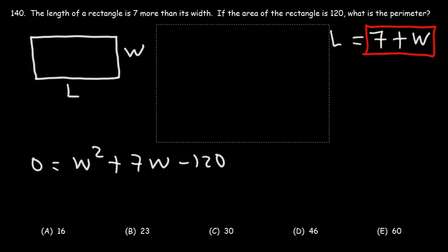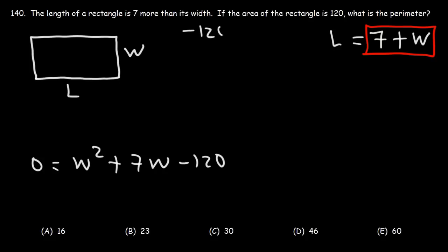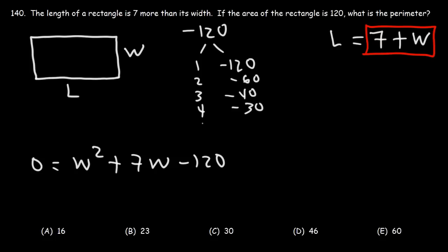Let's look for two numbers that multiply to negative 120 but add to the middle coefficient, seven. Dividing 120 by 1 gives 120; by 2 gives 60; by 3 gives 40; by 4 gives 30; by 5 gives 24; by 6 gives 20; and negative 120 divided by 8 is negative 15. Notice these two differ by seven, but to add up to positive seven we need positive 15 and negative eight.